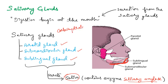The salivary amylase helps in the partial digestion of carbohydrates. The picture given in this slide is taken from the MSD Manual.